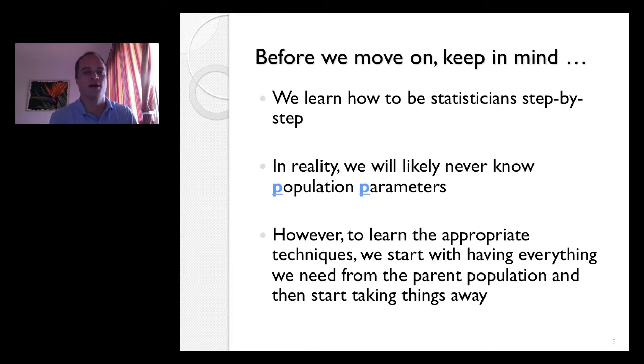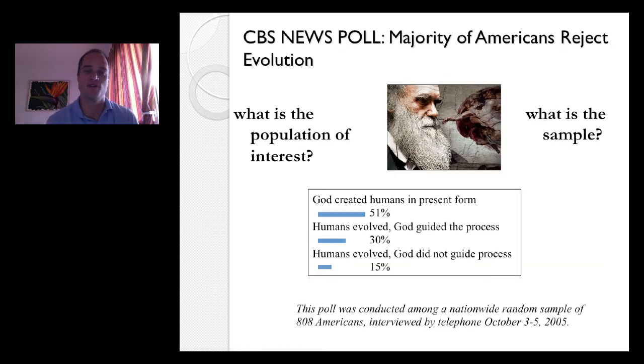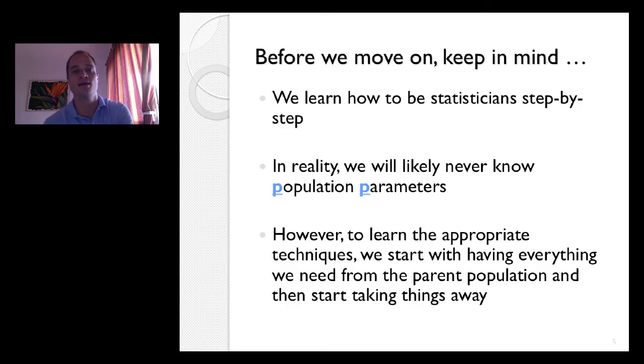Before we move on, I want you to keep in mind that we're going to be learning to be statisticians step by step. So early on in this course and in the early chapters of any textbook, you're going to know information about the population. Unlike here, which is a research question, CBS conducted the poll because they didn't know the answer. They didn't know what the population actually thinks about evolution. So they asked 808 people.